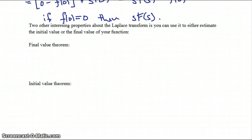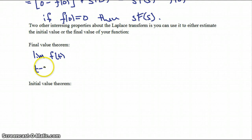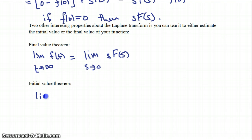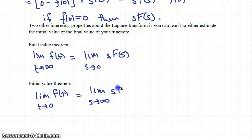Two other interesting properties of the Laplace transform allow you to estimate the initial or final value of your function. The final value theorem states that the limit of f(t) as t goes to infinity equals the limit as s goes to 0 of s times F(s). Similarly, the initial value theorem states that the limit of f(t) as t goes to 0 equals the limit as s goes to infinity of s times F(s).